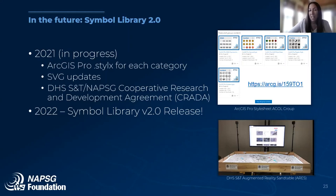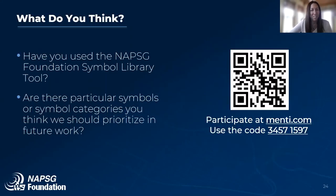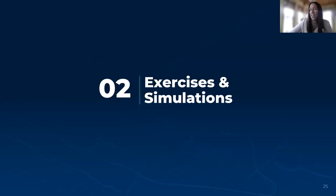This past year we entered into a cooperative research and development agreement (CRADA) with DHS. The agency has leveraged NAPSIG symbology for their augmented reality sand table. Through the CRADA, we're working to provide the tool they developed to the community as part of our next iteration of the symbol library tool, which should be available mid-2022. We're always interested in how our resources are being used by the community — if there are gaps you think we should prioritize in the future, we'd love that feedback. With that, I'll hand it back to Charlotte for our next section on exercises and simulation.